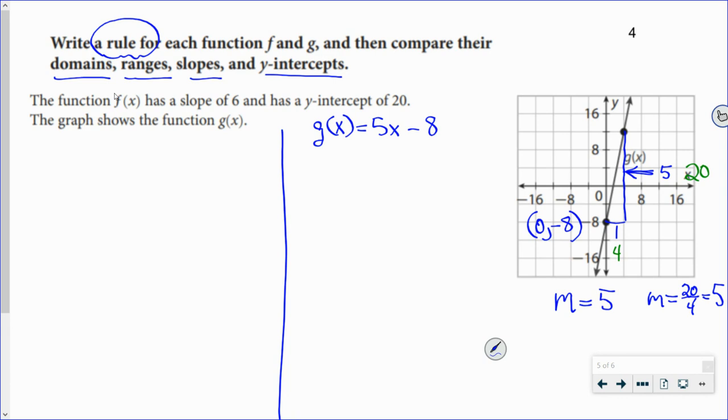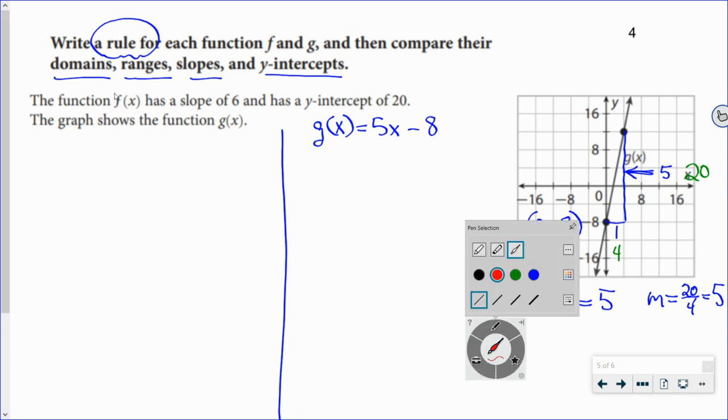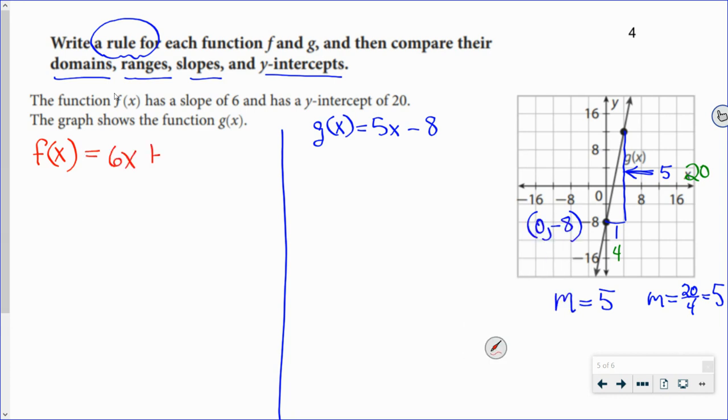Looking at the other function, this is the function f(x). f(x) has a slope of six and a y-intercept of twenty. So f(x) = 6x + 20.